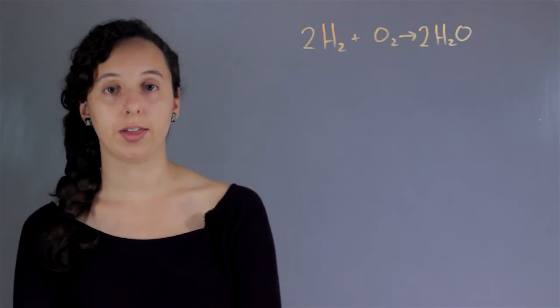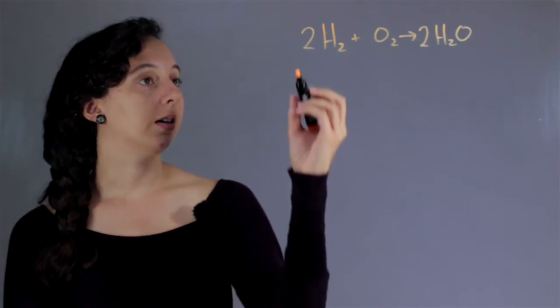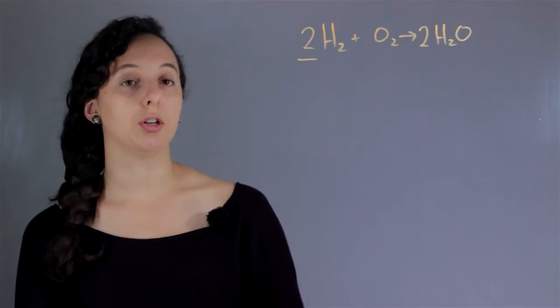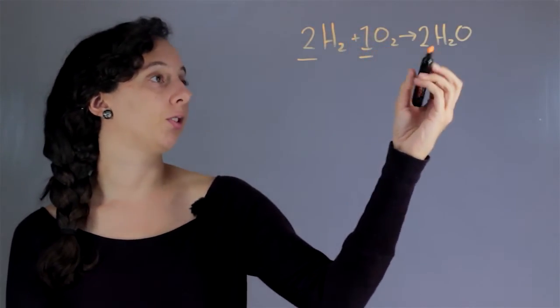All right, so now it's balanced. We can see that we have these different numbers here. So this is a two. If there's nothing written, it's an implied one. And this is two also.